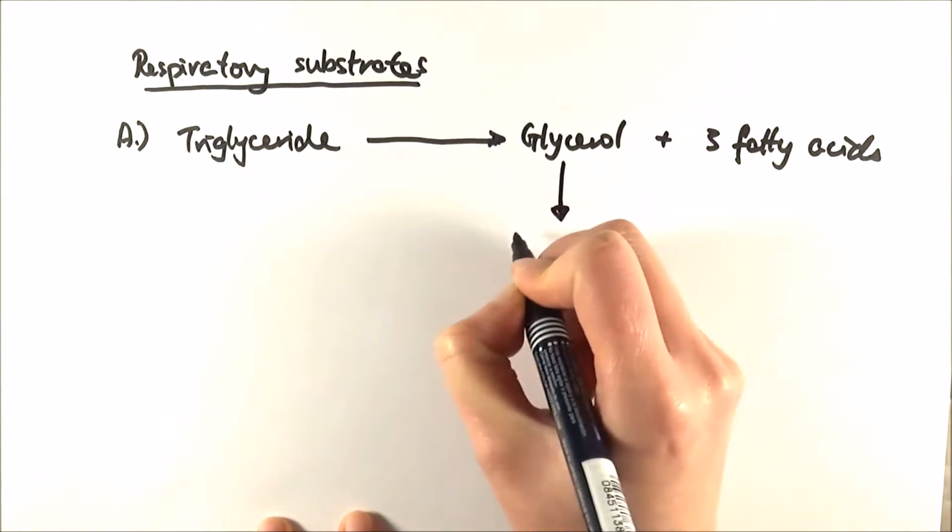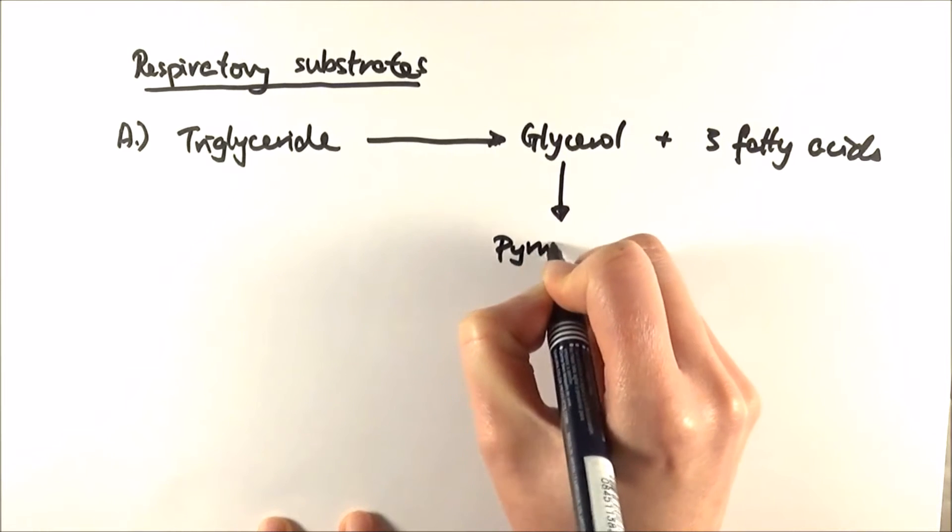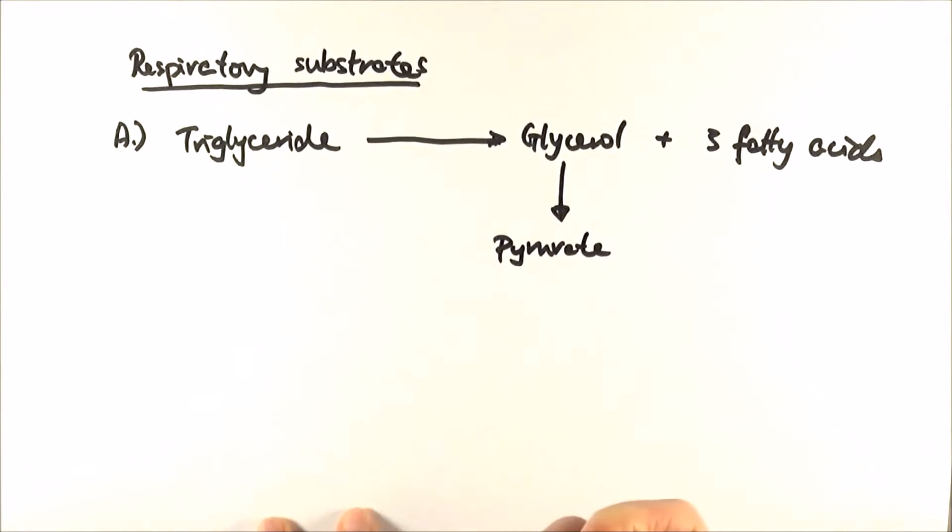Glycerol is converted into pyruvate, and as you would know it will then enter link reaction and Krebs cycle to make lots and lots of ATP.